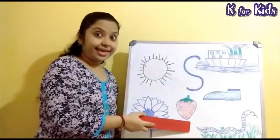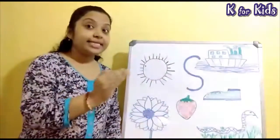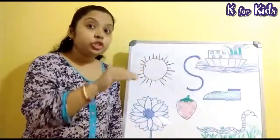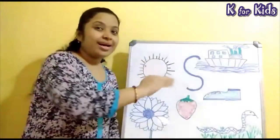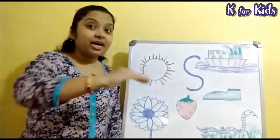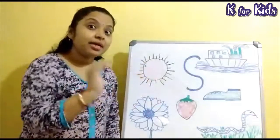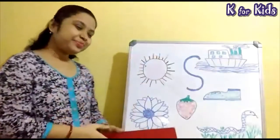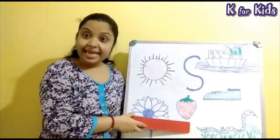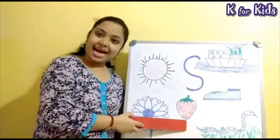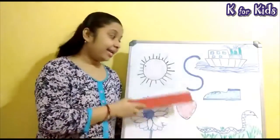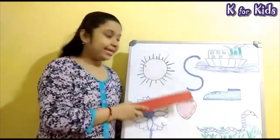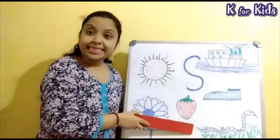Children, what is this? The snake is in the grass. Sh, sh, sh — the snake is in the grass. This is a snake. Snake starts with the alphabet S. S for snake.